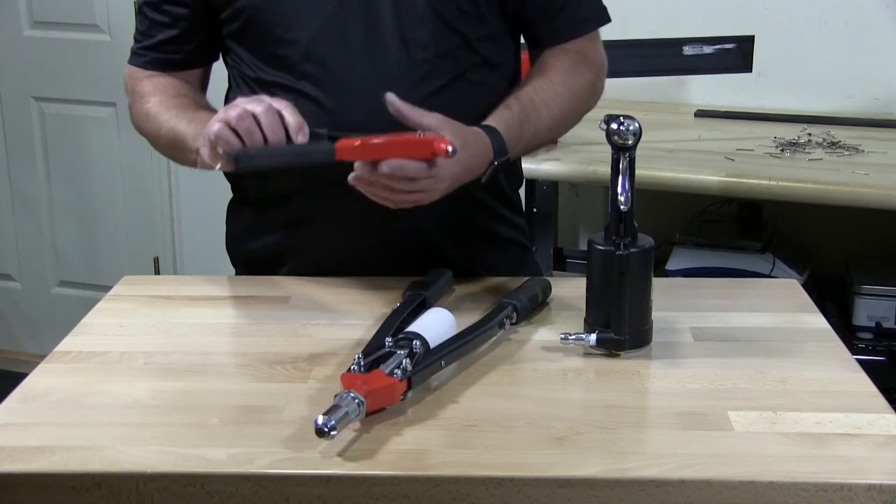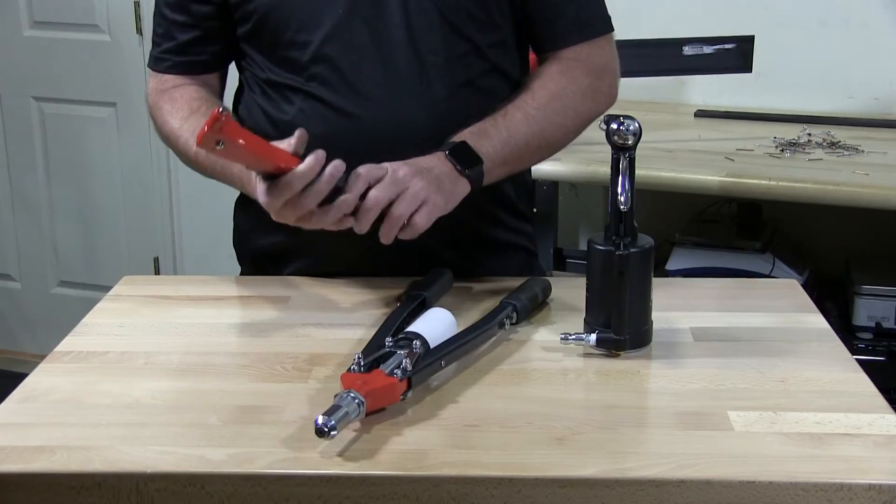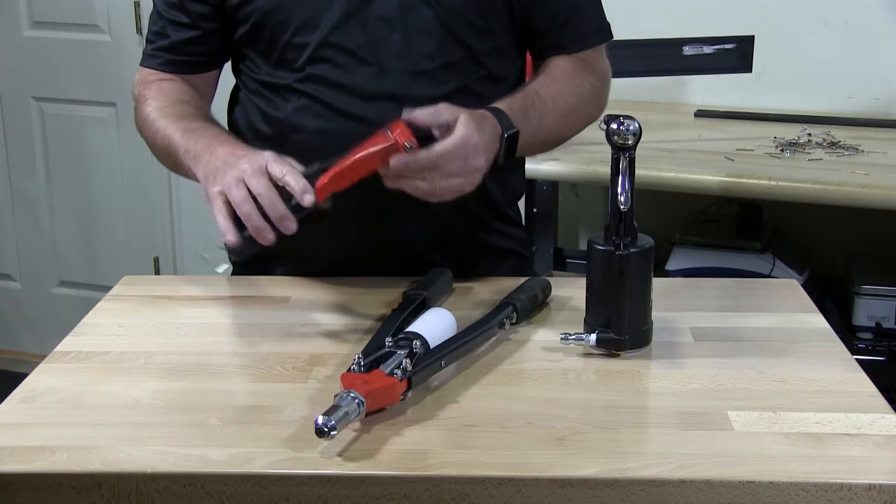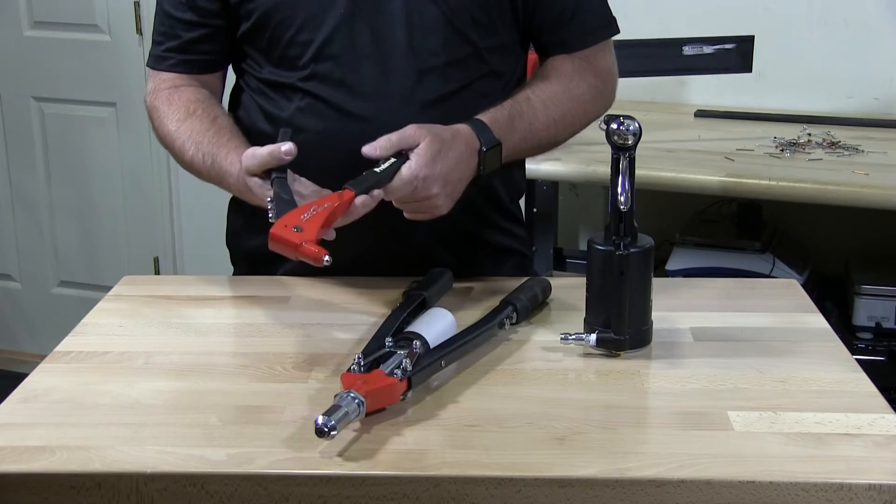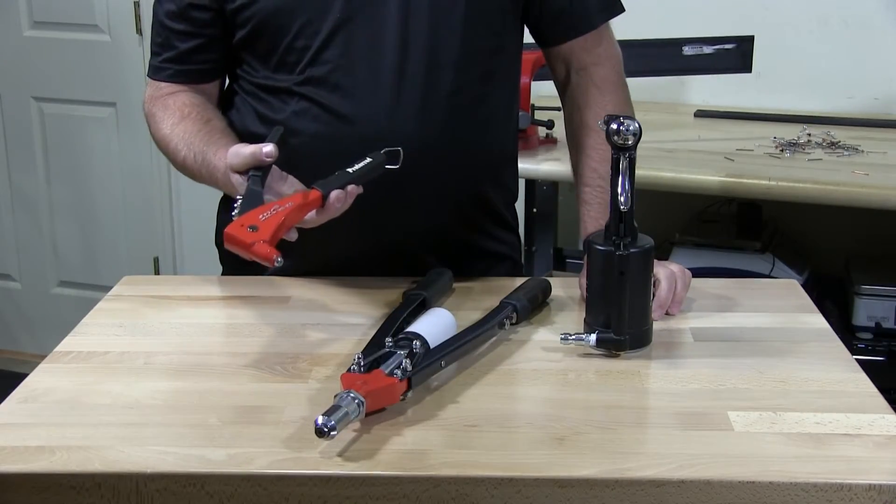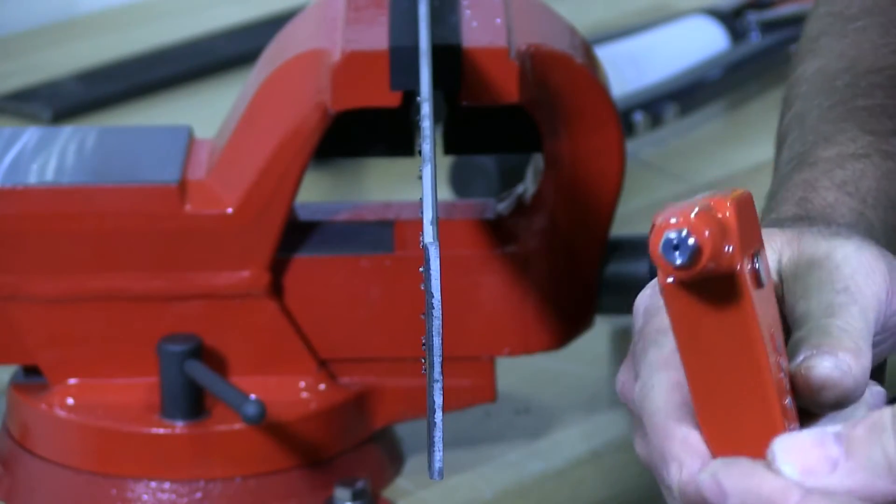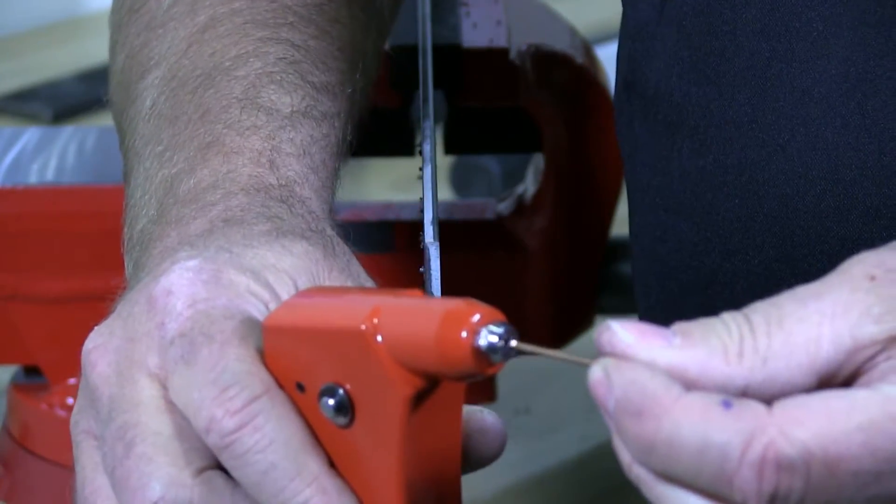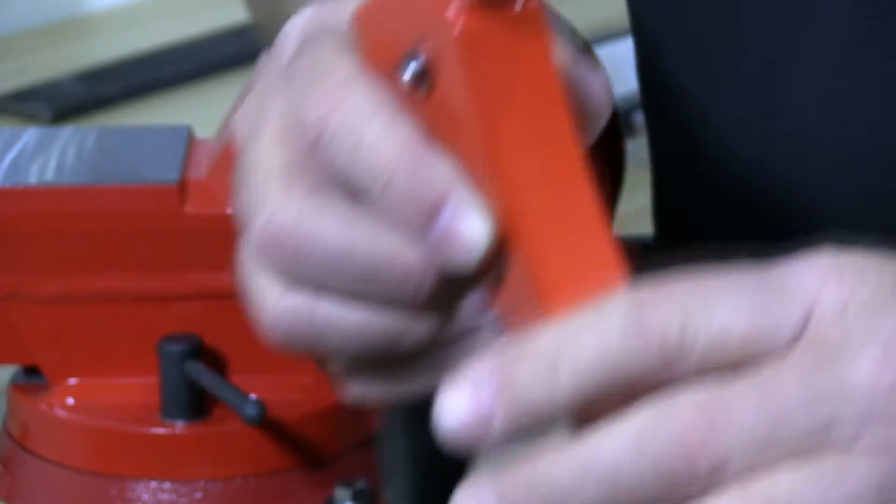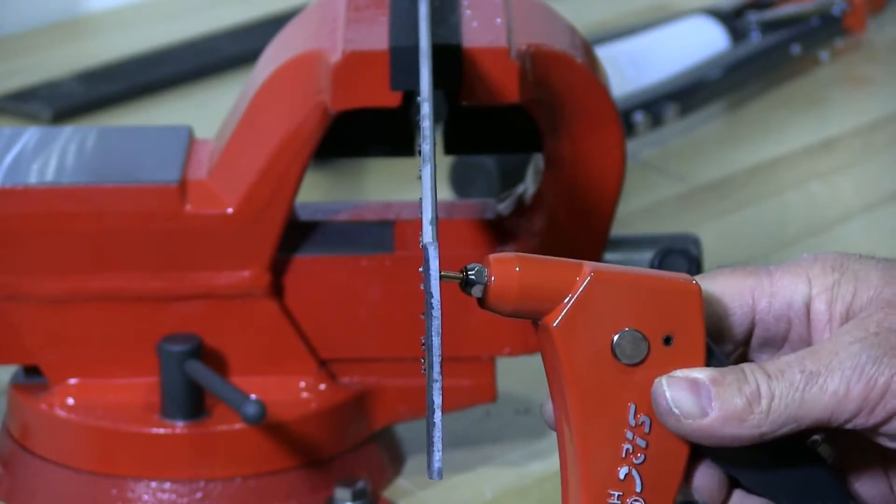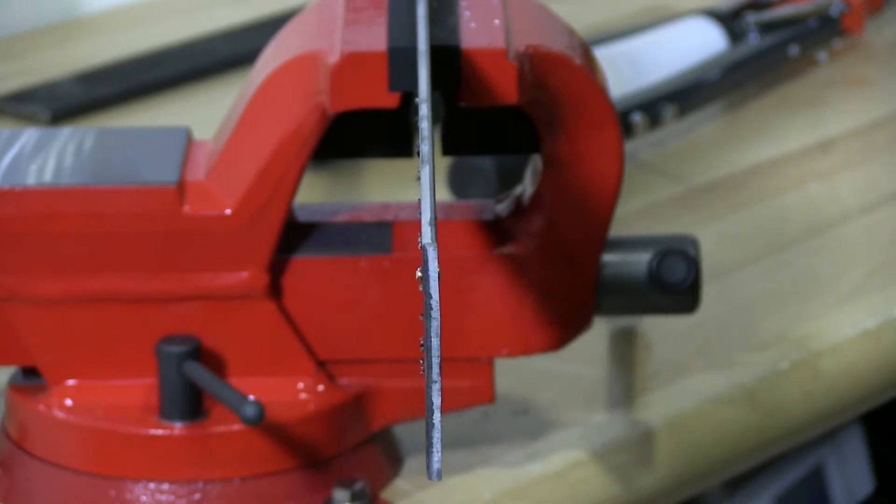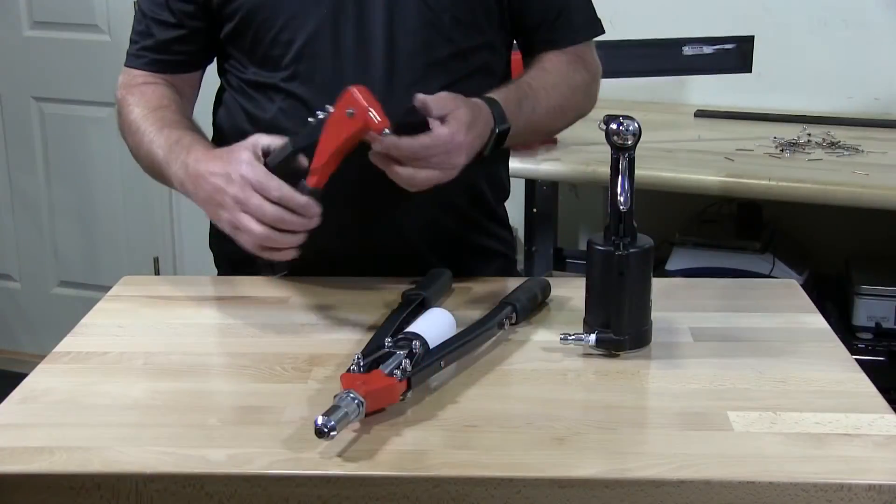This is your standard hand rivet tool. This is good for most installations of rivets all the way up to a number 6. The mandrel goes in to the tool first like this all the way in. I'm going to place it, put it in and you squeeze it until you get the snap.